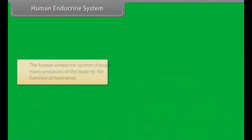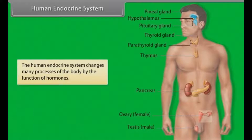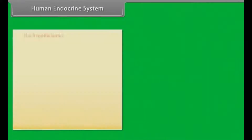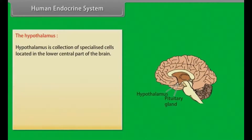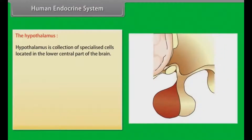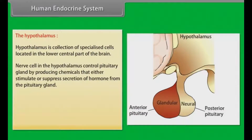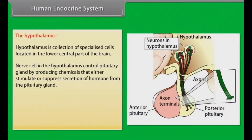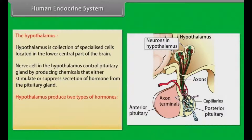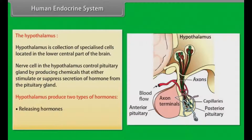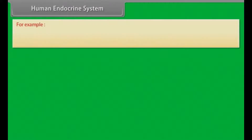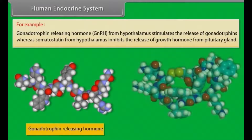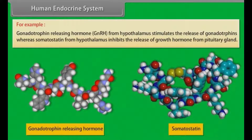The human endocrine system changes many processes of the body through the function of hormones. The hypothalamus is a collection of specialized cells located in the lower central part of the brain. Nerve cells in the hypothalamus control the pituitary gland by producing chemicals that either stimulate or suppress hormone secretion from the pituitary gland. The hypothalamus produces two types of hormones — for example, gonadotropin-releasing hormone stimulates the release of gonadotropins, whereas somatostatin inhibits the release of growth hormones from the pituitary gland.